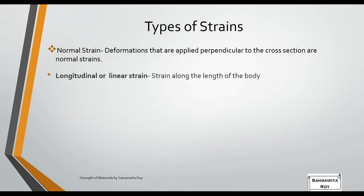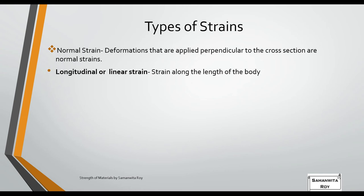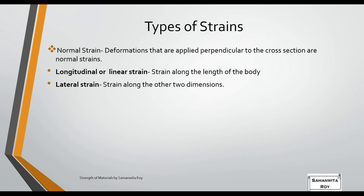Normal strain refers to deformations perpendicular to the cross-section. Longitudinal or linear strain is strain along the length of the body. Lateral strain is strain along the other two dimensions (breadth and thickness). When a rectangle undergoes tensile loading, its length increases while breadth and thickness decrease to compensate — this lateral decrease in breadth and thickness is lateral strain.